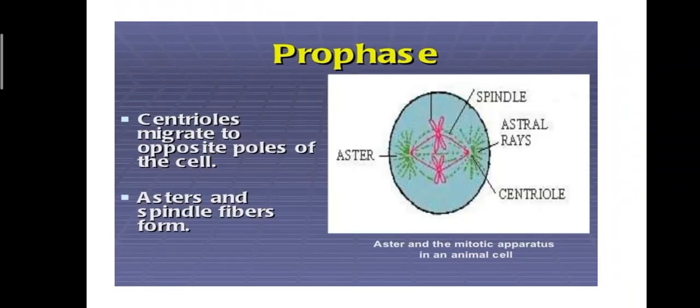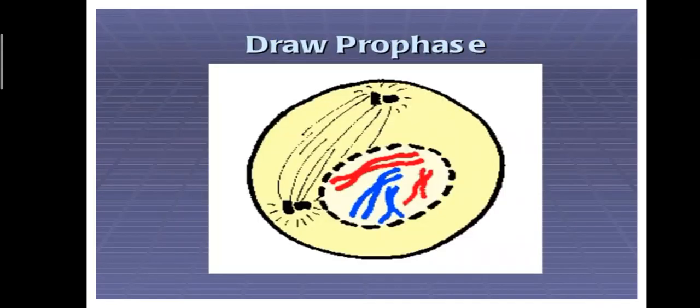Prophase: centrioles migrate to the opposite poles of the cell and asters and spindle fibers are formed. Now with the help of this diagram, we can draw the diagram in your notebook.